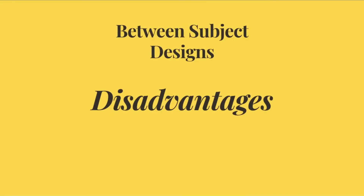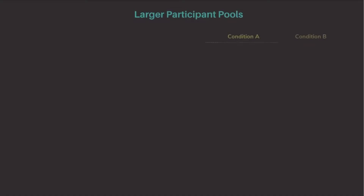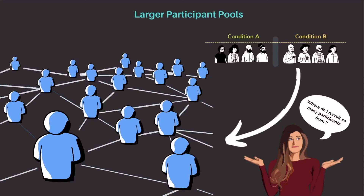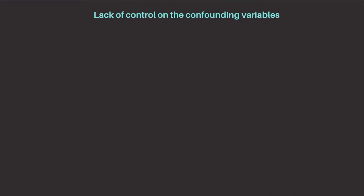Let's now look at the key disadvantages of using the between-subjects design. The first key disadvantage is that a large participant pool has to be recruited. This can be a challenge, as it can be difficult to find enough participants. The other disadvantage is that it can decrease our control over confounding variables. To understand what confounding variables are, you can check out our video on confounding variables by clicking the i button on the top right corner of the screen or finding the link in the description below.